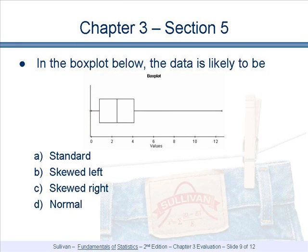In the box plot, the data is likely to be either standard, skewed left, skewed right, or normal. You can see from the whisker on the box plot to the right extends much further than the whisker to the left.